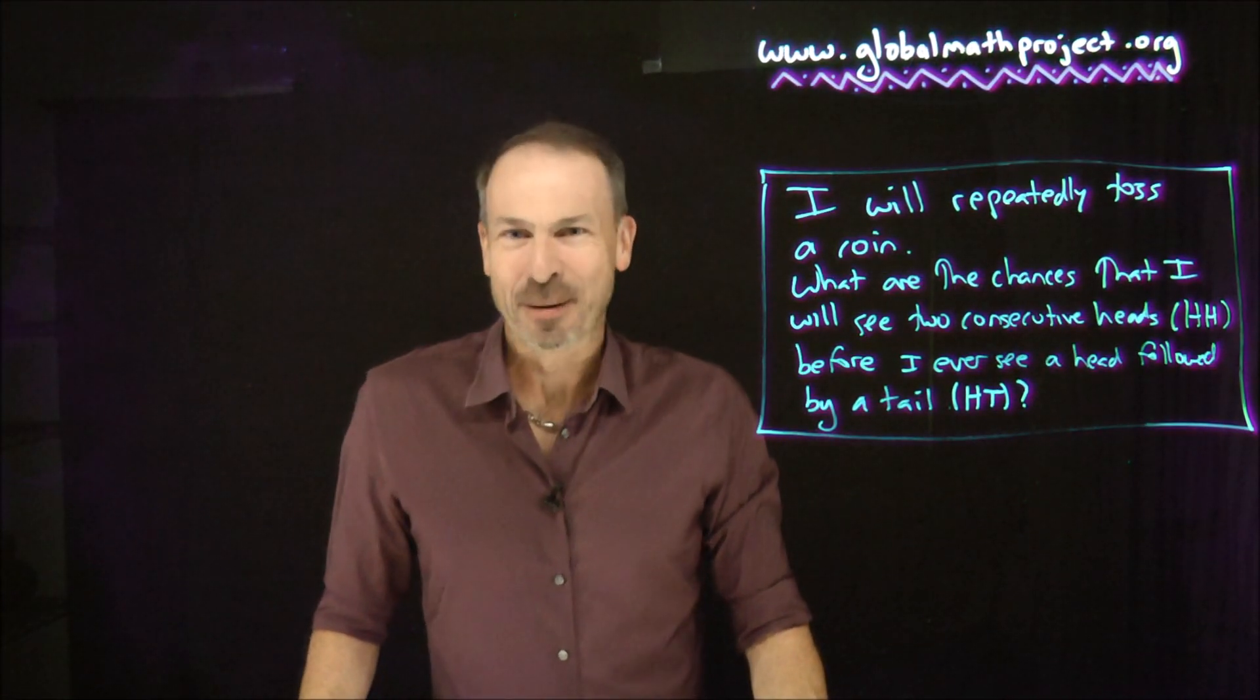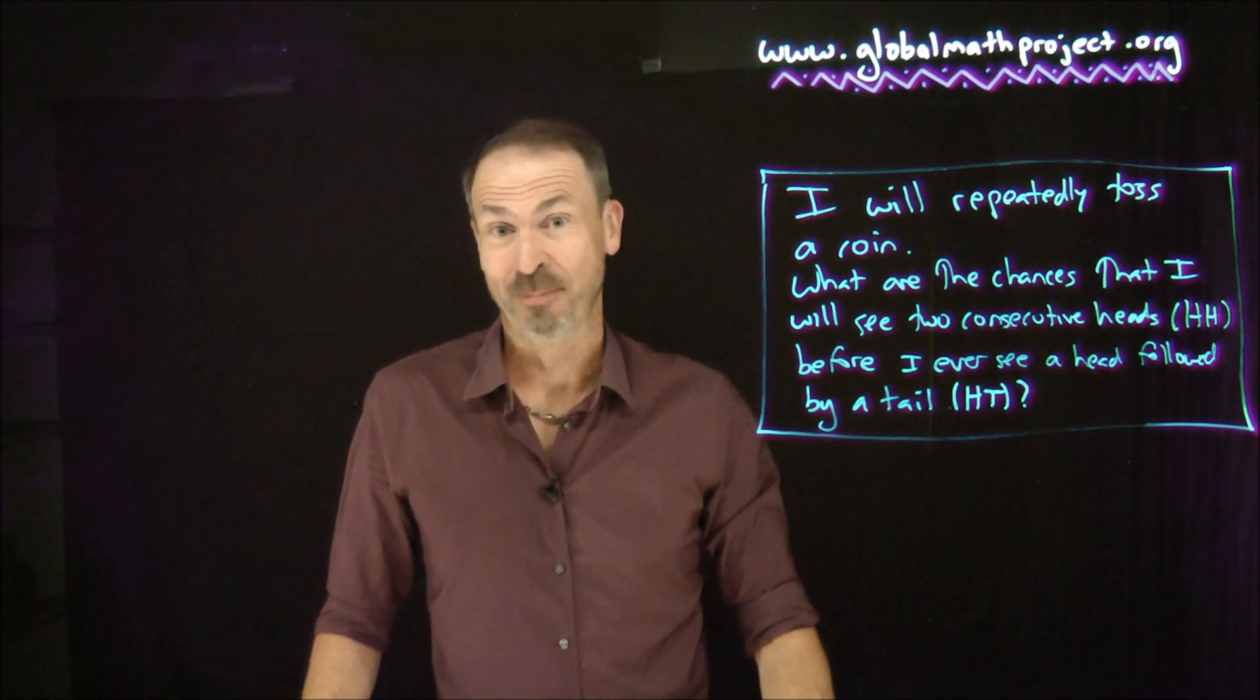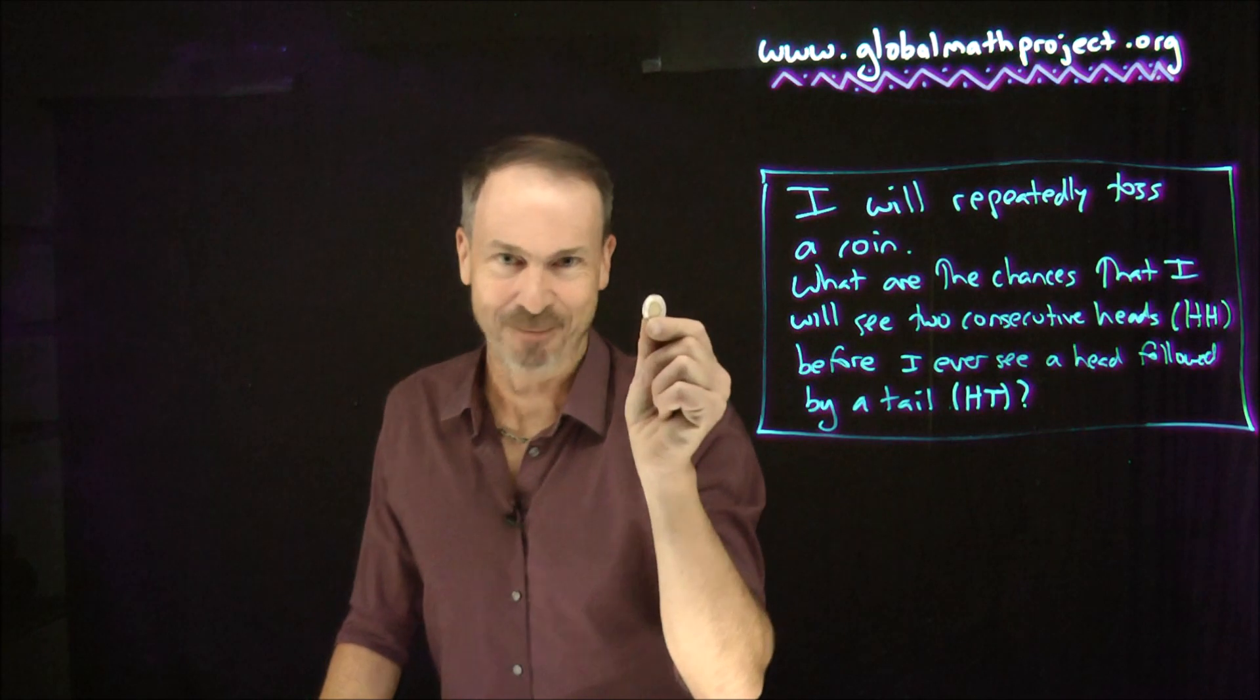G'day! Infinite garden paths are a terrific way to analyze infinite probability problems. For example, here's a problem about tossing a coin over and over again.